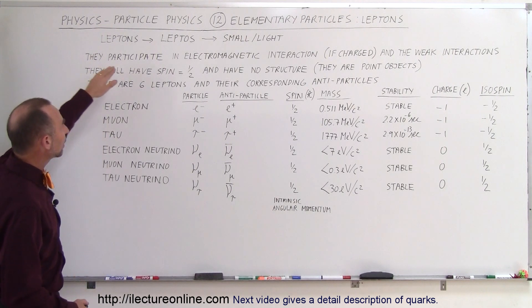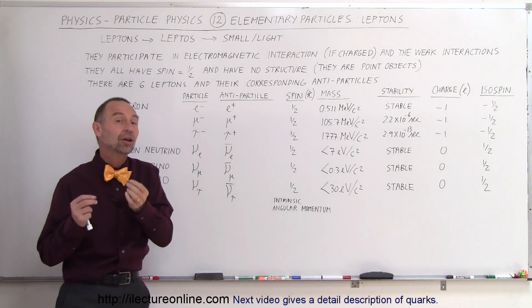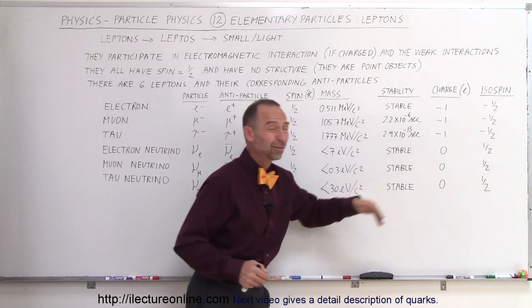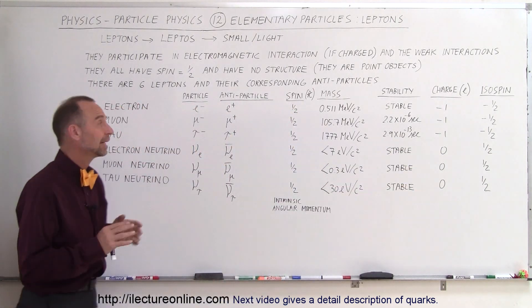So they participate in the electromagnetic interaction if they are charged. Now the neutrinos do not carry a charge. You can see here the charge is zero for the neutrinos, so therefore there is no electromagnetic interaction.